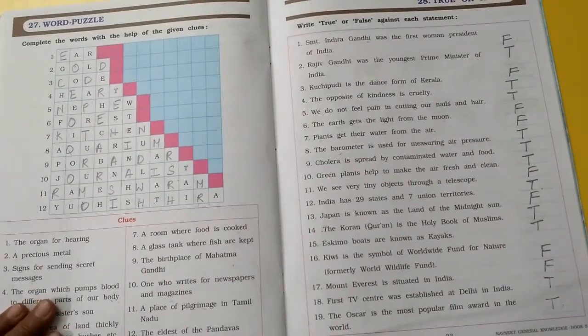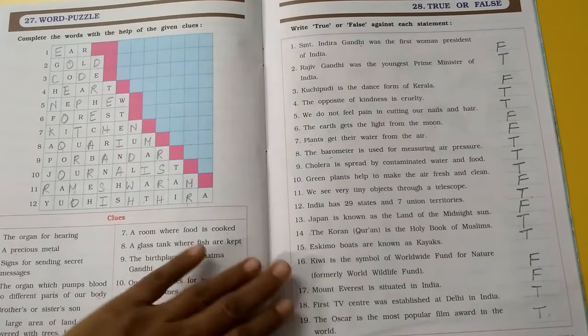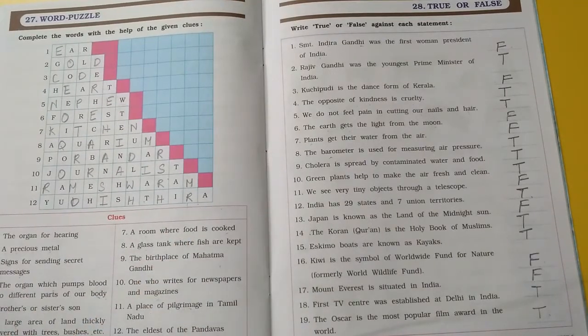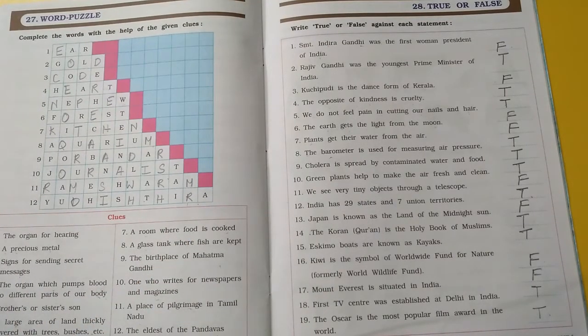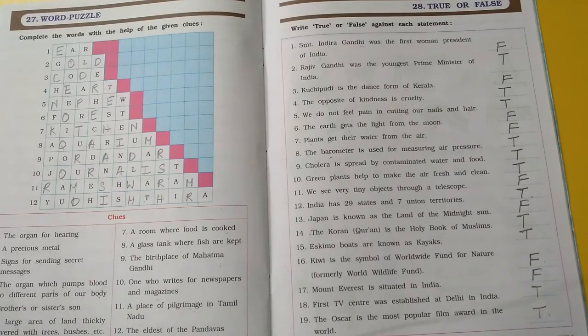To bachcho ye hai hamare 27 word puzzle aur 28 jo hai true and false. Ye dono chapter aapko aapki book mein samajhkar complete karne hai. Okay. Thank you.